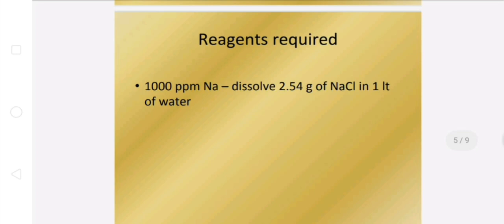How do we analyze it? Reagents required. 1000 ppm sodium. Dissolve 2.54 g of sodium chloride NaCl in 1 liter of water. If we take 2.54 g of sodium chloride, we will get 1000 ppm sodium.